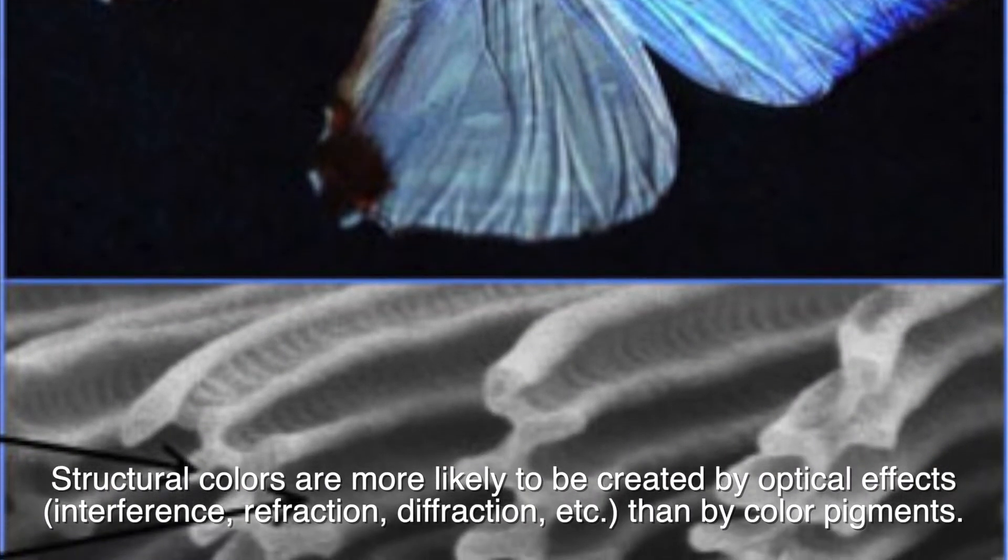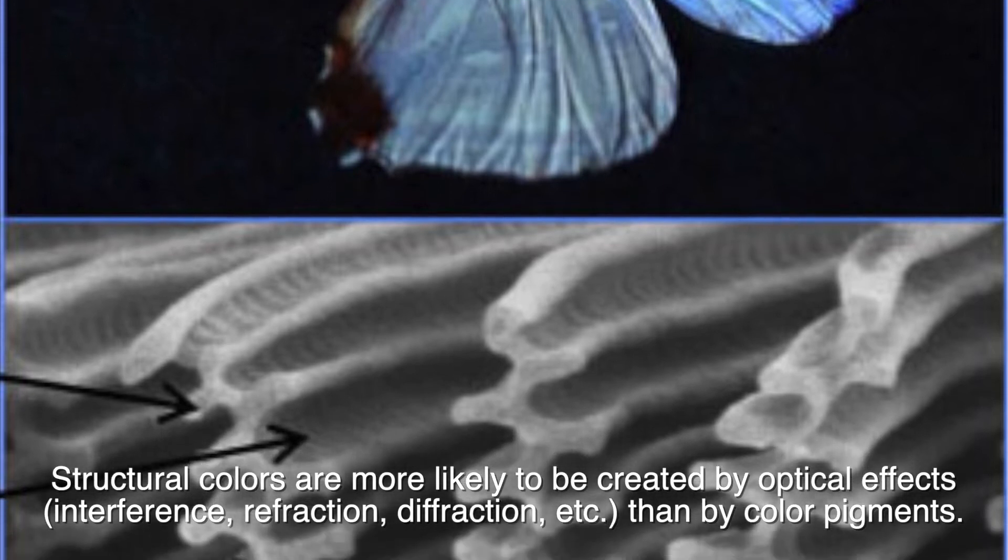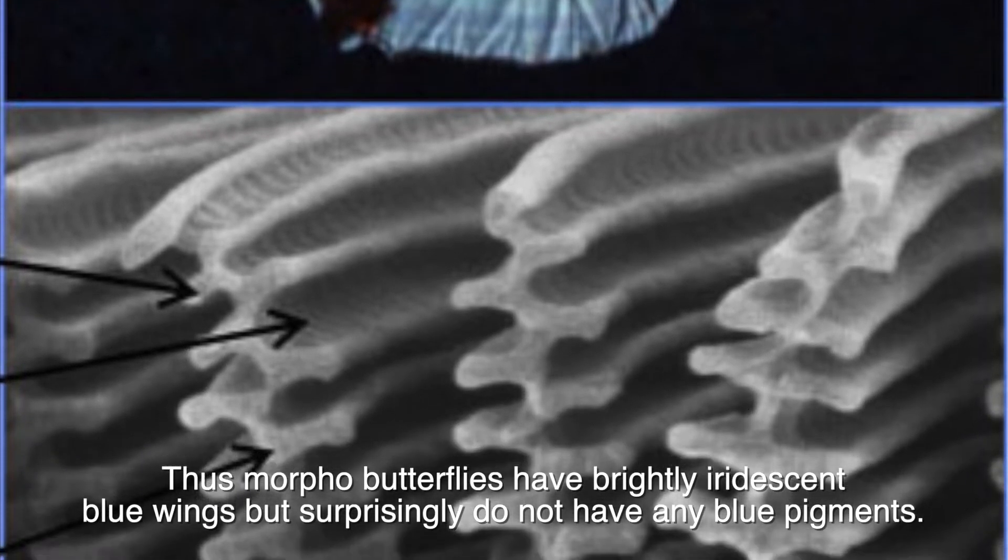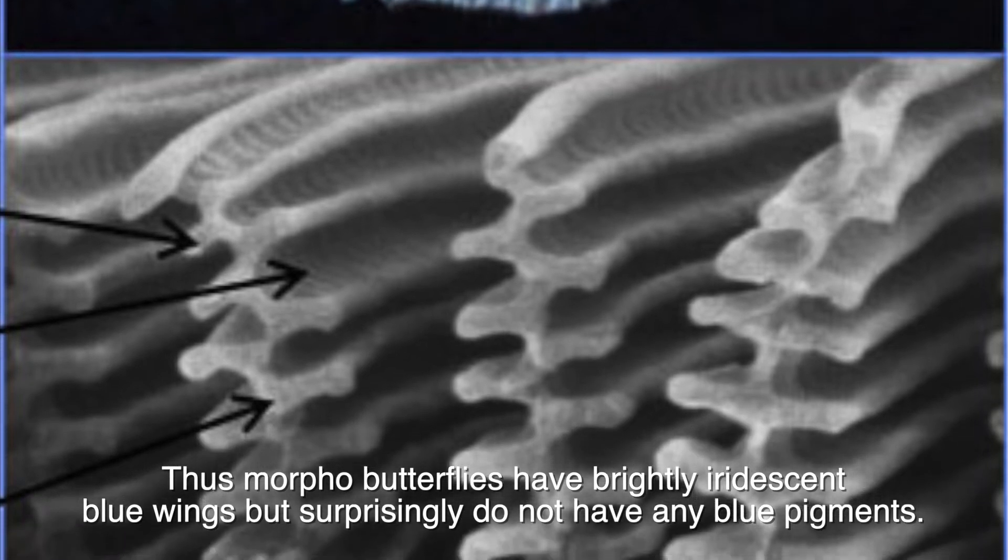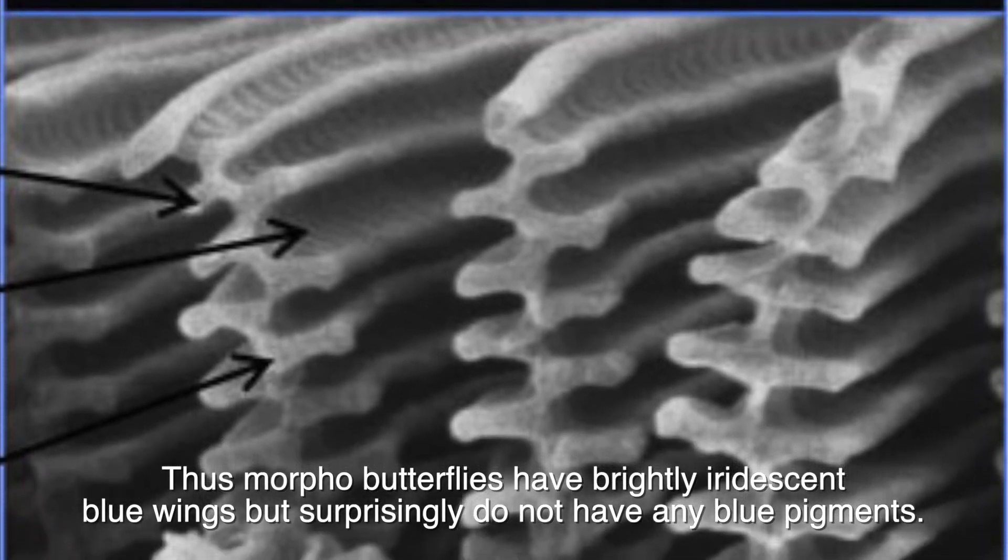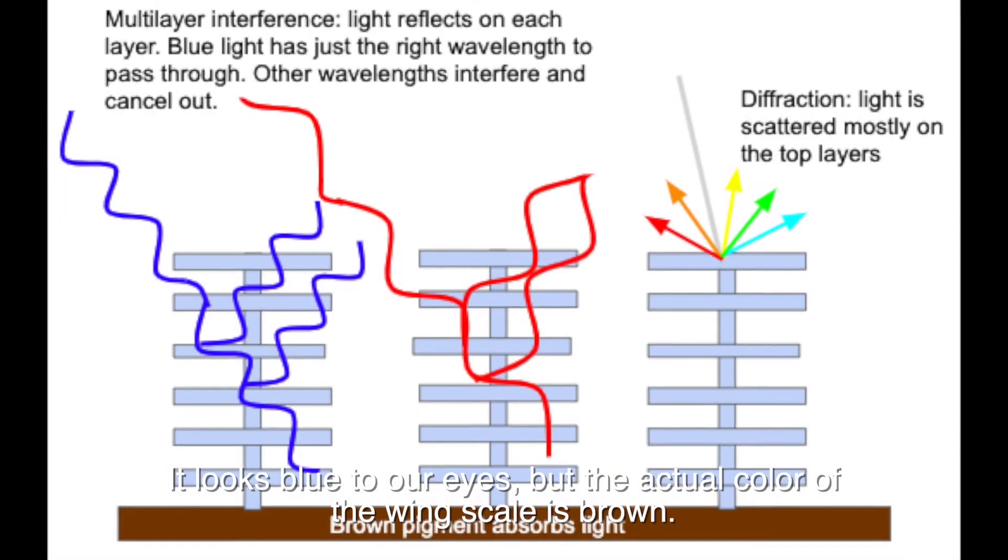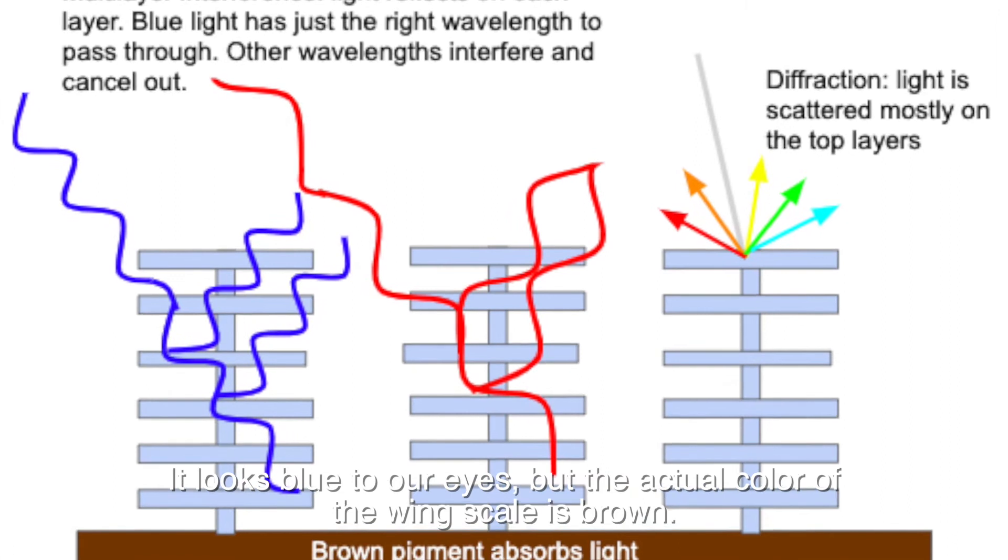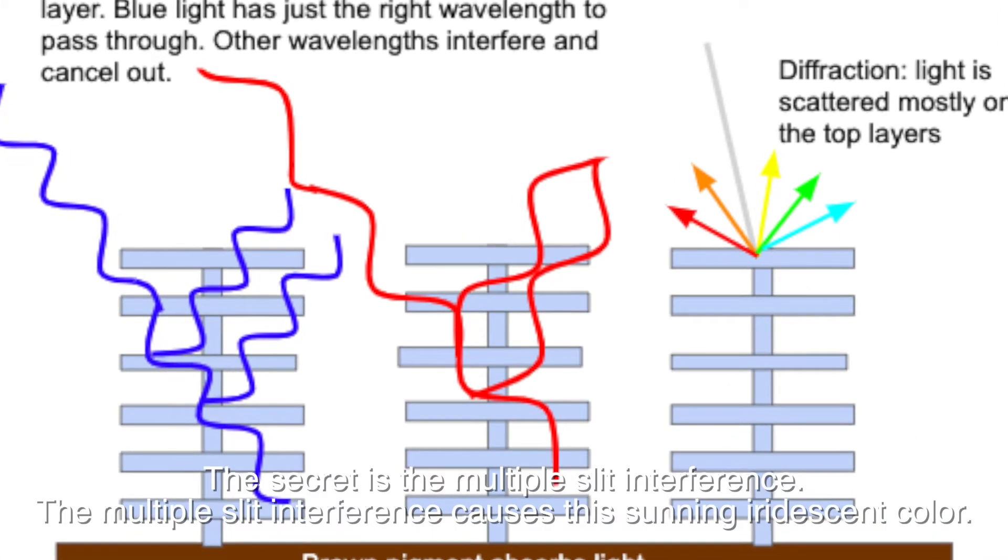than by color pigments. Thus, Morpho butterflies have brightly iridescent blue wings but surprisingly do not have any blue pigments. It looks blue to our eyes, but the actual color of the wing scale is brown. The secret is